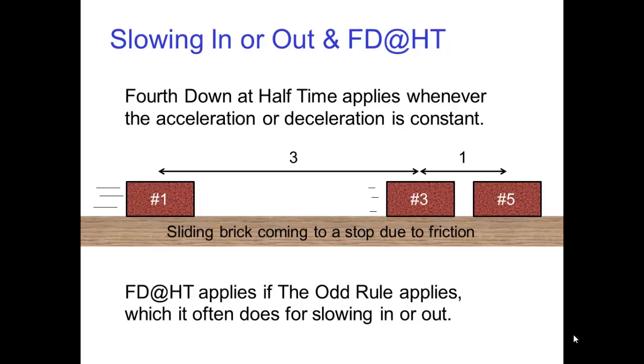Finally, the fourth down at half-time rule isn't just for falling motion. It applies whenever the acceleration or deceleration is constant. For example, a sliding brick coming to a stop due to friction follows the fourth down at half-time rule. Fourth down at half-time applies if the odd rule applies, which it often does for slowing in or slowing out.